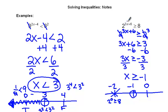Plug in negative 1. 3 times negative 1 is negative 3. Plus 6 is positive 3. So, we get 2 to the 3rd is greater than or equal to 8. And 2 to the 3rd is 8. So, it is equal. Which means that's true. We'll shade it in.